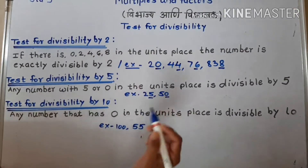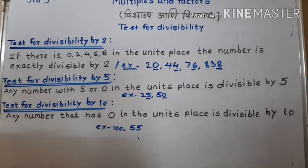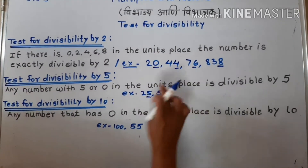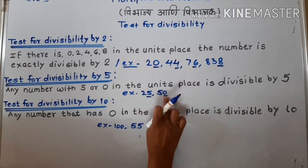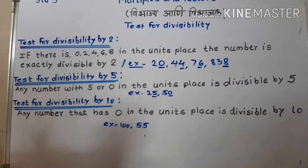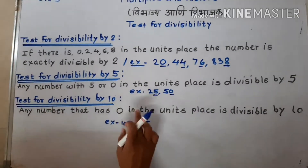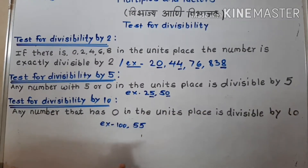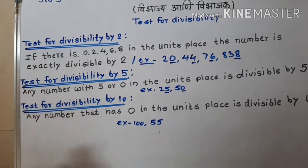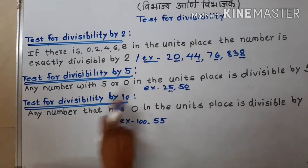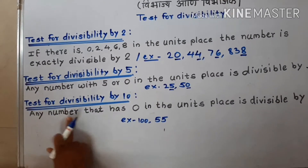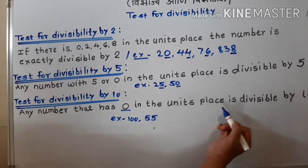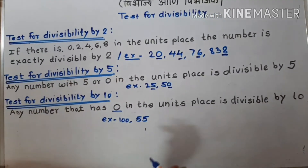And the third test: divisibility by 10. Any number with 0 in the unit place is divisible by 10.